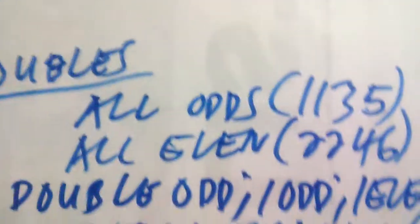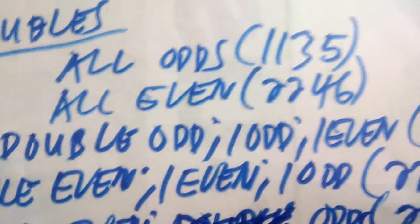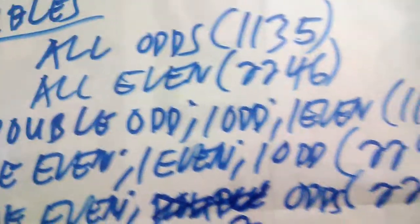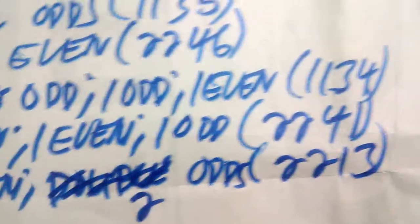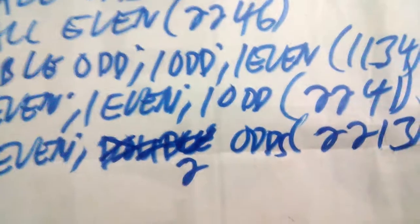For the doubles, we have: all-odd — example 1135; all-even — example 2246; double-odd, one-odd, one-even — example 1134; double-even, one-even, one-odd — example 2241; and double-even, two-odd — example 2213.